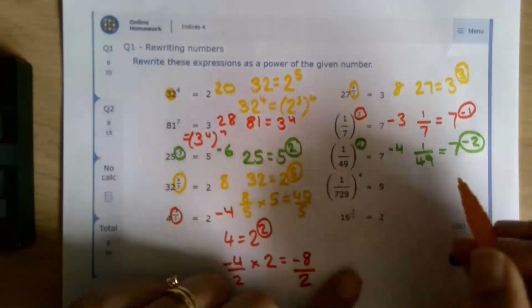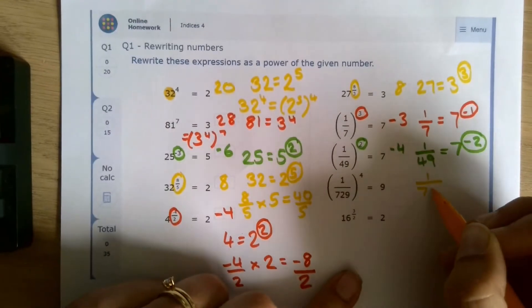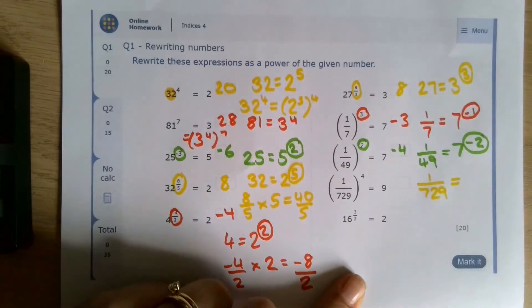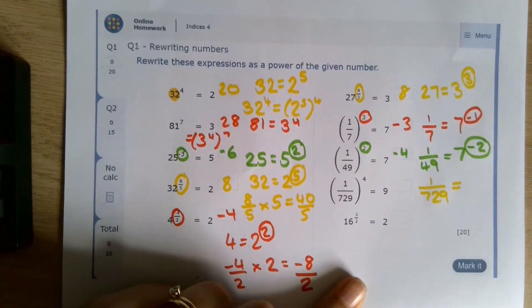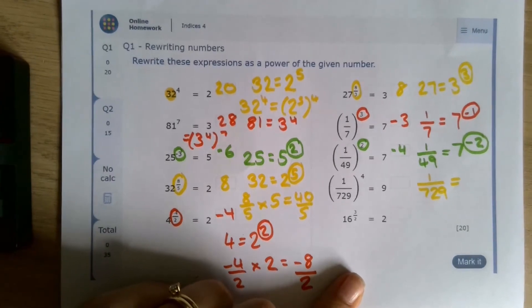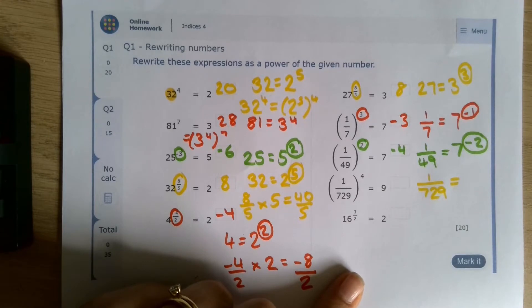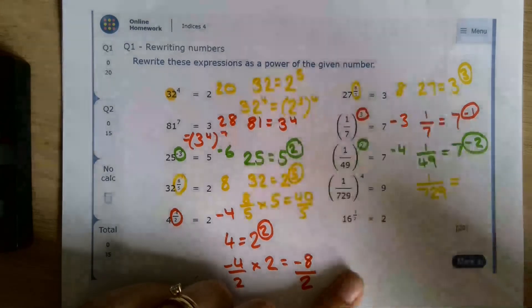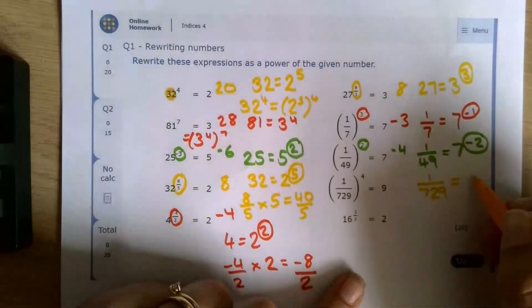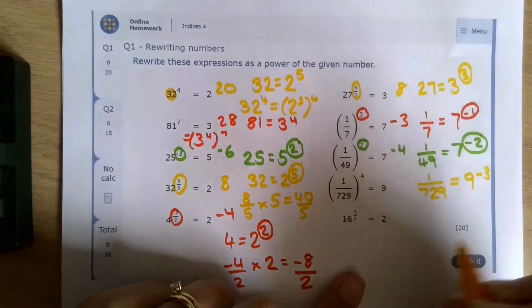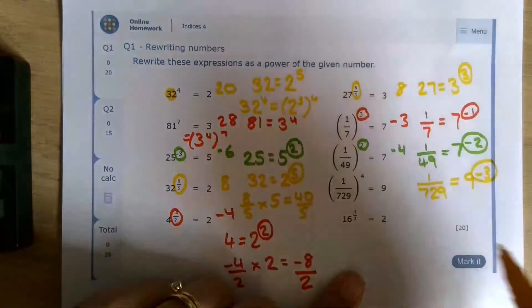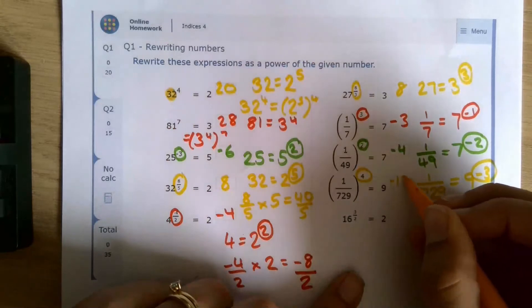1 over 729. This is something that you will be expected to work out quickly in the GCSE because it is a cube number. And so 729 is 9 cubed. 9 times 9 is 81, times it by 9 again, you get 729. So this is going to be 9 to the power of negative 3 because it's 1 over 9 cubed. Once again, we multiply those two powers, negative 12.